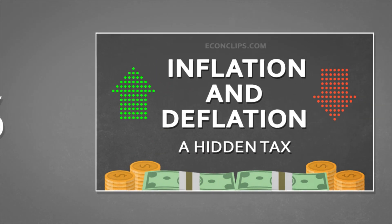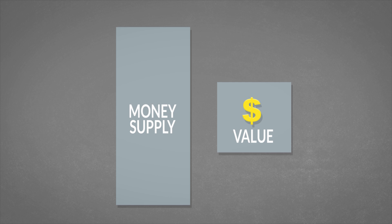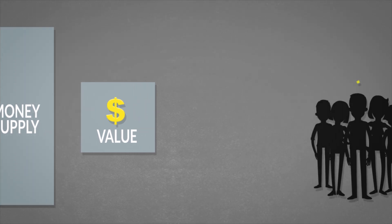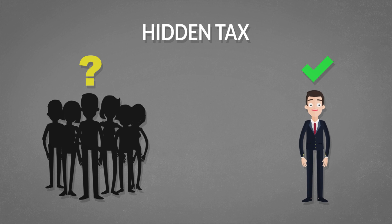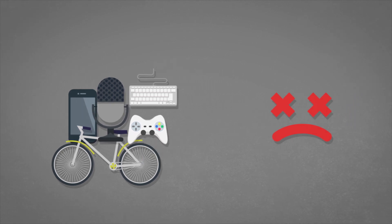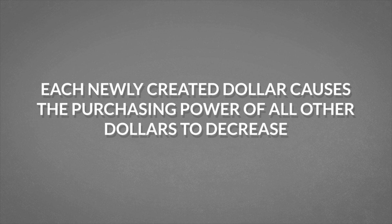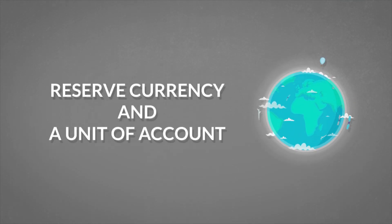As we've seen in our video about inflation, each new dollar reduces the purchasing power of every dollar in existence. This is why inflation is sometimes referred to as a hidden tax. Not many people understand this phenomenon — most of us just feel that each year we can buy less and less for the same amount of money. But it is easier for some to put blame on the greed of entrepreneurs who raise the prices. To sum up, each newly created dollar causes the purchasing power of all other dollars to decrease. As a result, the dollar's inflation is also exported abroad due to its global position as both reserve currency and a unit of account.